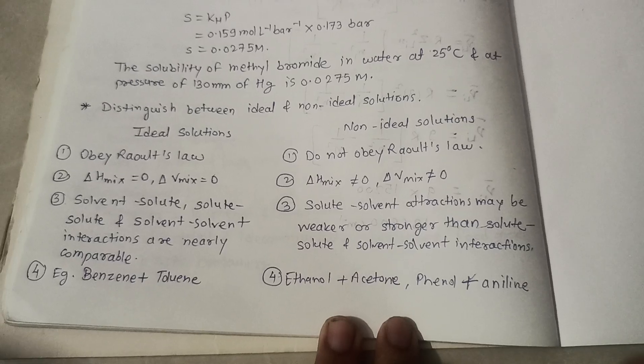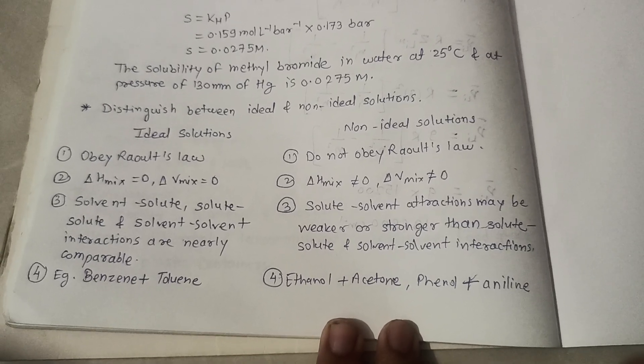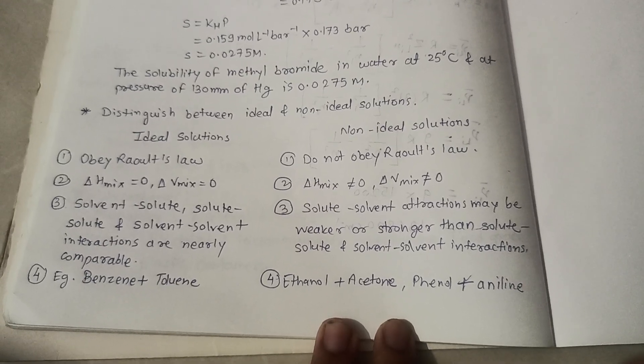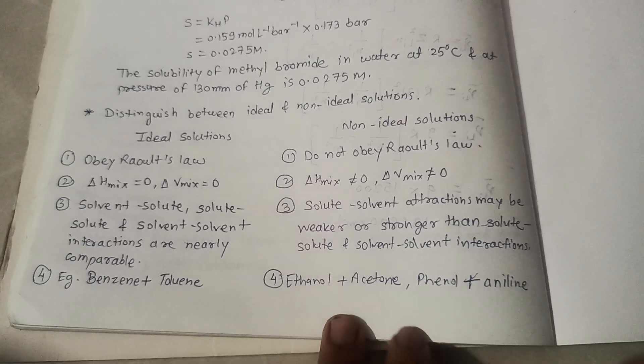Example for ideal is benzene plus toluene. For non-ideal: ethanol plus acetone, phenol plus aniline. In non-ideal there are two categories: positive deviation and negative deviations.